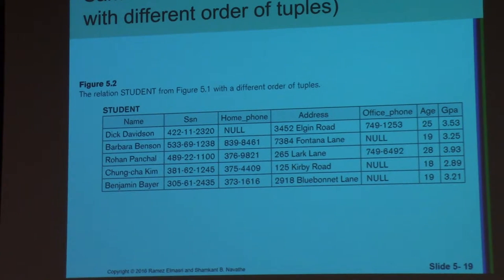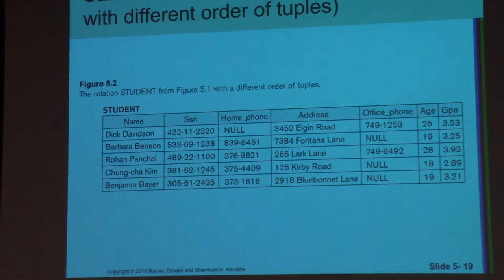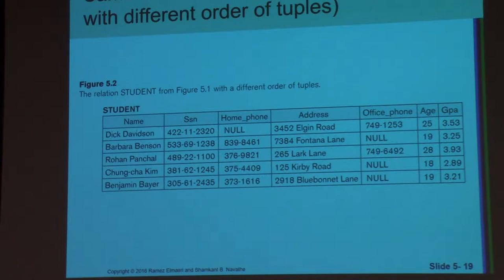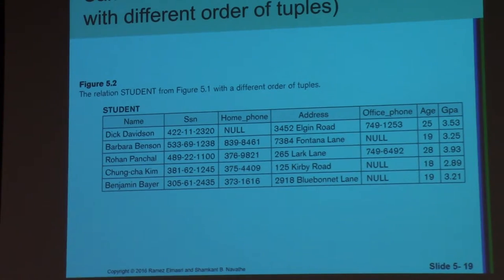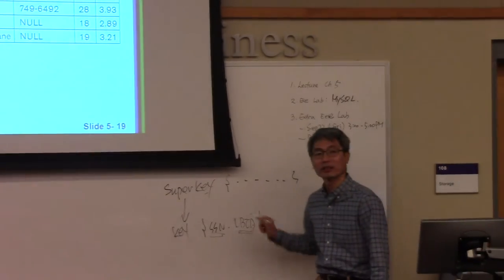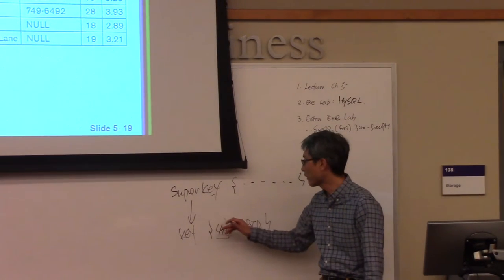As long as you can identify each tuple, it is considered a super key. There are many super keys — like the number of subsets — but we don't need all of them. Instead, we need only the SSN, which is the minimal super key. For example, if we also have a student UBID, both SSN and UBID are minimal keys. So in this case we have two keys.